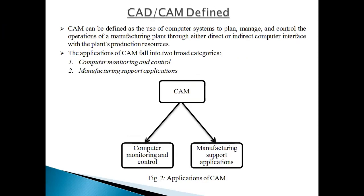CAM means Computer Aided Manufacturing. It defines the use of a computer system to plan, manage, or control the operation of a manufacturing plant through either direct or indirect computer interface with the plant production resources. Direct means the computer is directly connected to your VMC, giving programming, and as per that program the VMC operates — that is called direct connection.